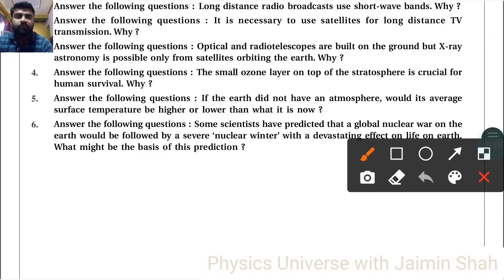The small ozone layer on top of the stratosphere is crucial for human survival. Why? Because if the ozone layer is not there, then ultraviolet light will be incident on the earth, and it is very harmful to humans and all living creatures. If the earth did not have an atmosphere, would its average surface temperature be higher or lower?